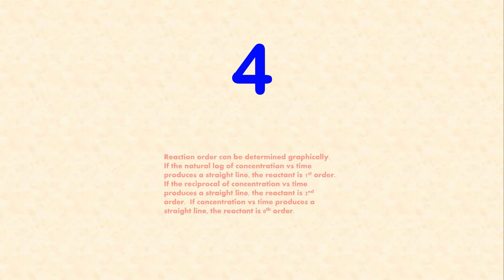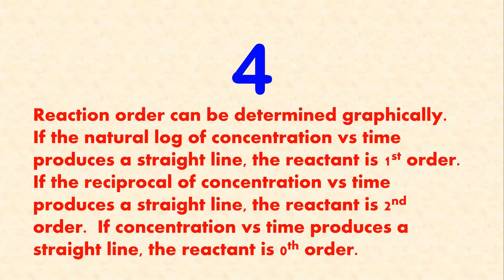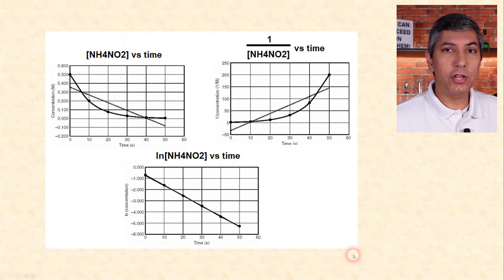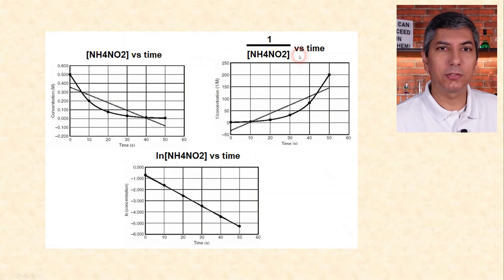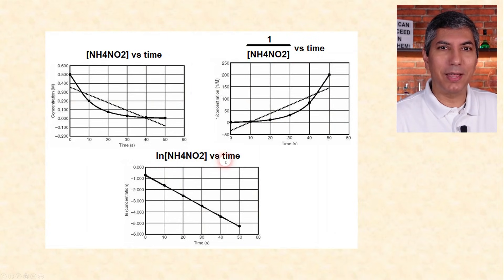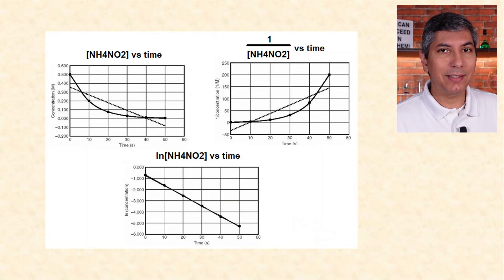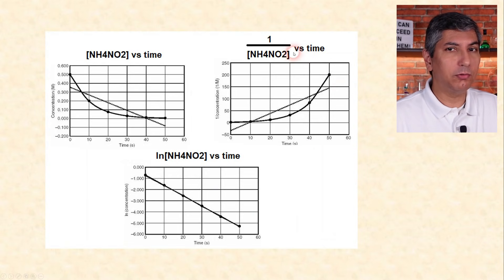Number four: reaction order can be determined graphically. If the natural log of concentration versus time produces a straight line, the reactant is first order. If the reciprocal of concentration versus time produces a straight line, the reaction is second order. If concentration versus time produces a straight line, the reaction is zeroth order. For the decomposition of ammonium nitrite, we make three graphs: concentration vs. time, 1/concentration vs. time, and ln(concentration) vs. time. Since the natural log graph is the straight line, the reaction is first order with respect to that reactant.